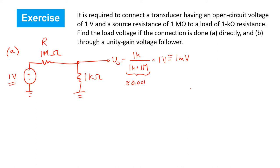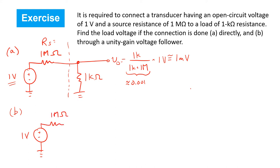The reason is the very large source resistance RS. This is not uncommon for sensors or other transducers connected in practice. Now if we want to extract the full signal from the source — a value closer to 1 volt — we need to insert something between the source and the load that has a high input resistance, so the voltage divider ratio formed with the 1 megaohm source resistance is not too bad, and a low output resistance. That's exactly what the voltage follower does. So in part B, let's consider what happens when we insert that voltage follower between the source and the load.